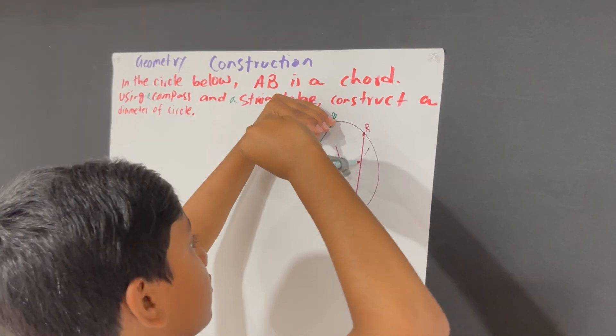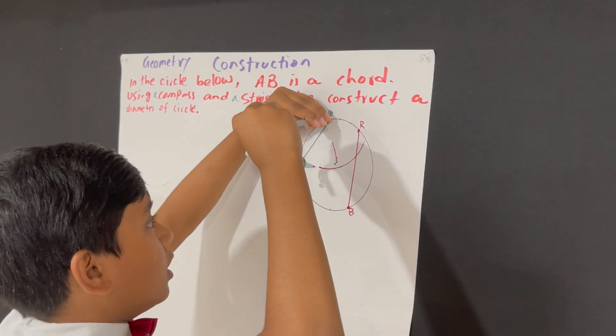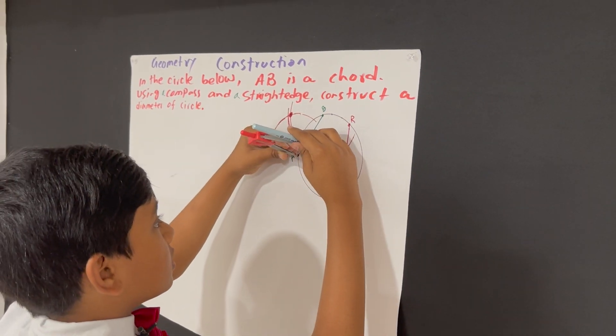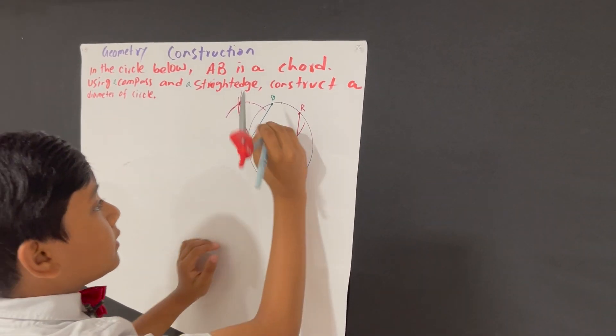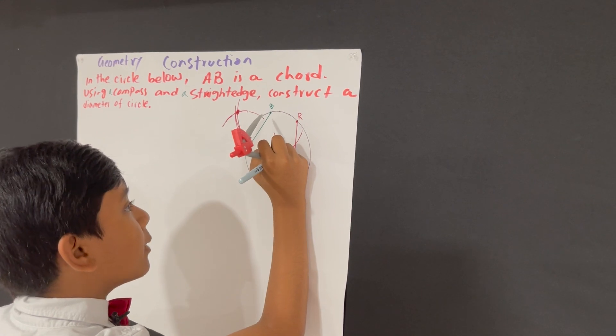Come on. So, we need A to go for a little bit more and boom. Now, we have intersection point number two.